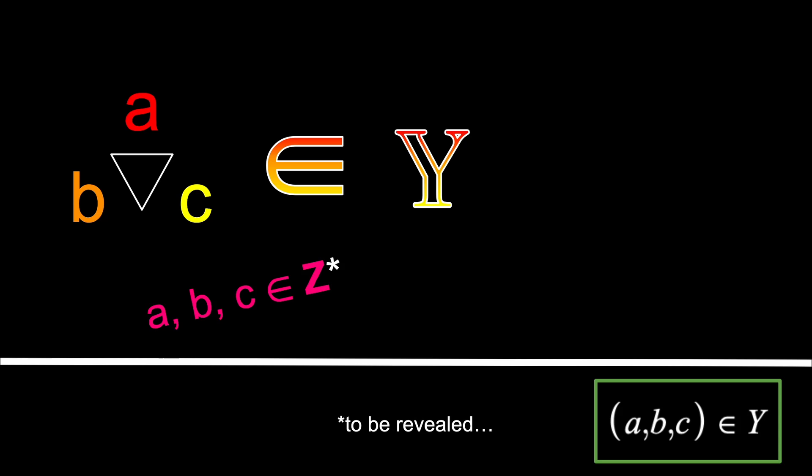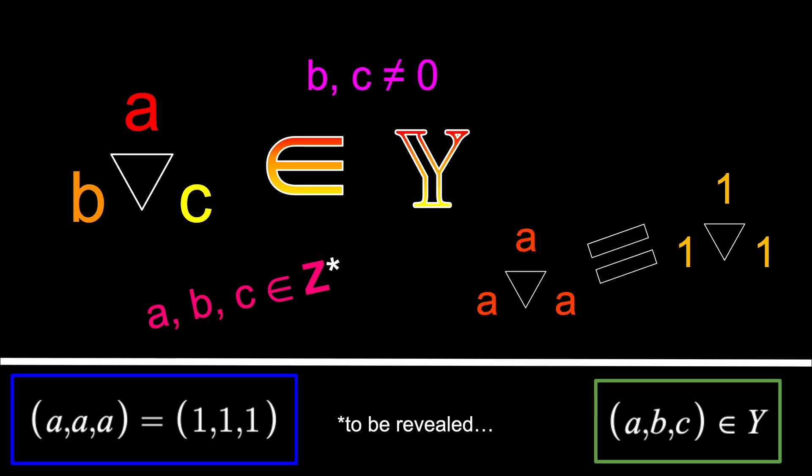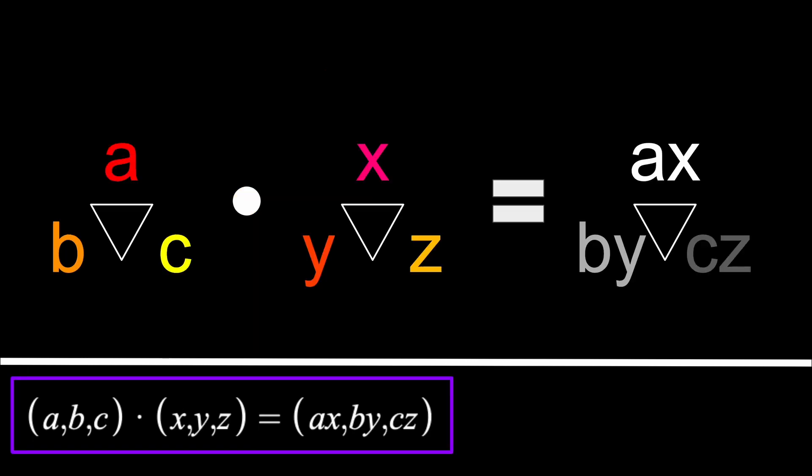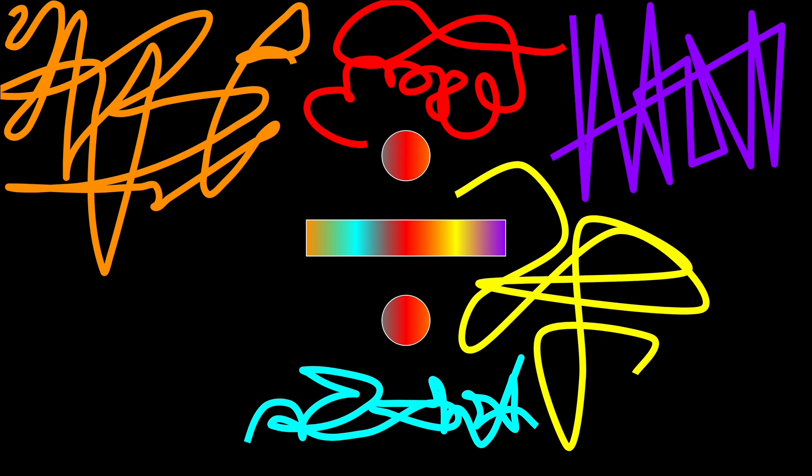Let's get to the properties. First, the denominators cannot be zero, and that equivalence class rule from the rationals still applies. Next are the operations. Multiplication is simple, just multiply the numerators and denominators together, but division is a little wacky.